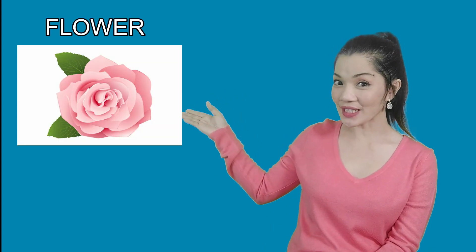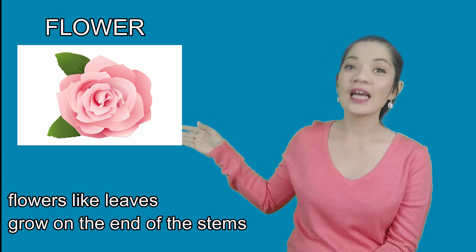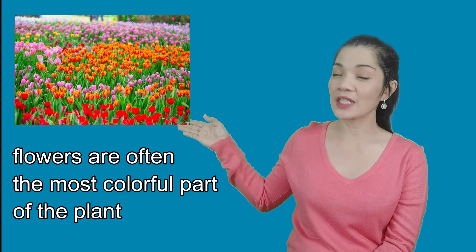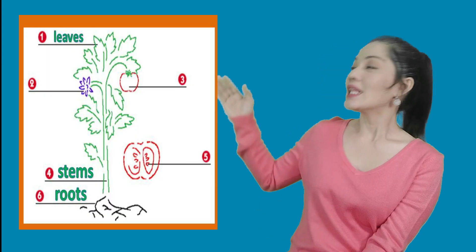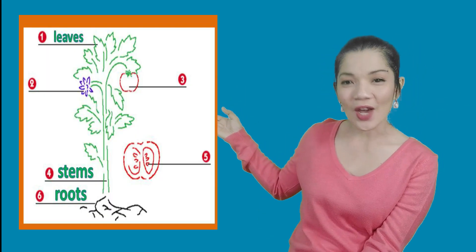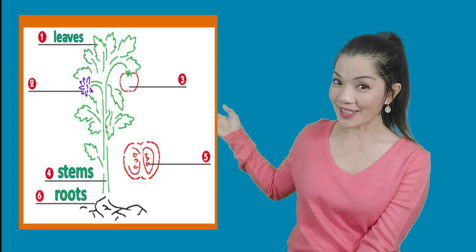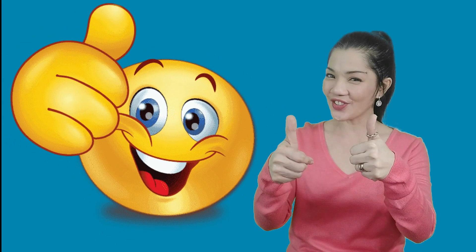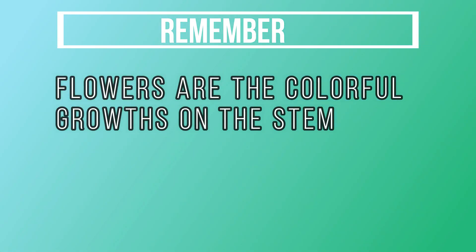The next part we're gonna look at are the flowers. Flowers, like leaves, grow on the end of the stems. Flowers are often the most colorful part of the plant. Many people love flowers. Some plants have flowers, some plants do not. Look at the plant diagram and tell me which part is the flower. Remember, flowers are the colorful growths on the stem.